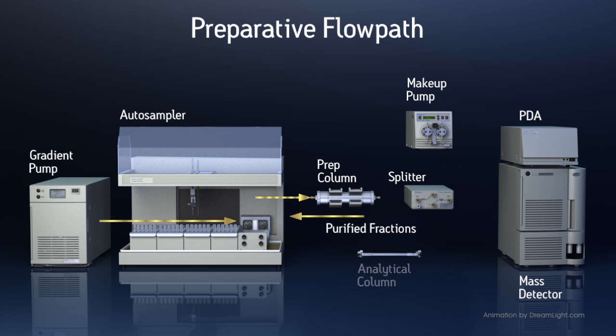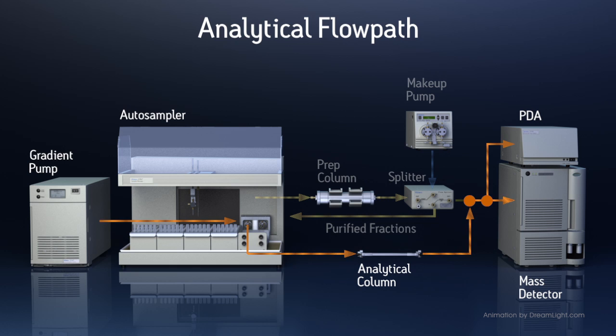The MS detector is a destructive detector, so a splitter is required to pass 99.9% of the preparative flow to the collector. The remainder of the sample is sent to the detectors, carried by the makeup flow from the 515.